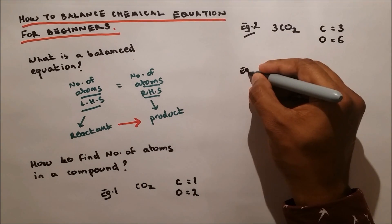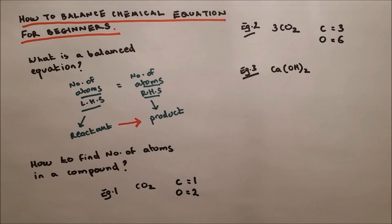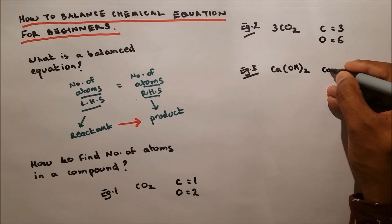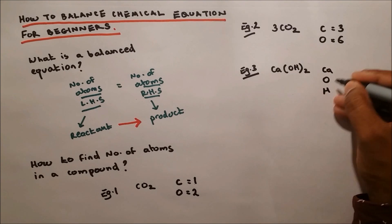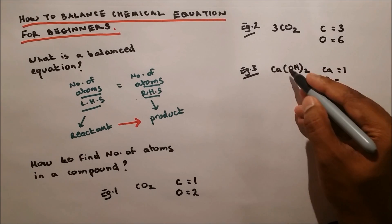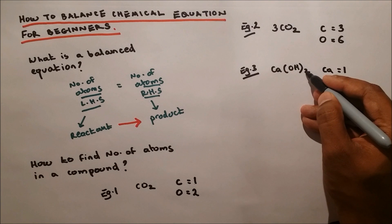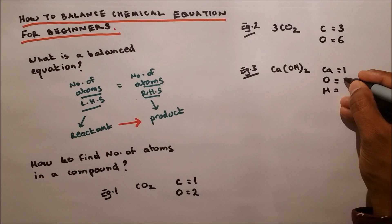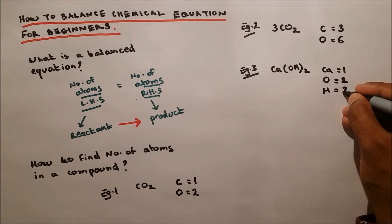Let's do one more example. I have three different atoms here. This is called calcium hydroxide, Ca(OH)2. I have calcium, oxygen, and hydrogen. Calcium is one. The bracket has a two, which refers to the oxygen and hydrogen. So we have two oxygen and two hydrogen.